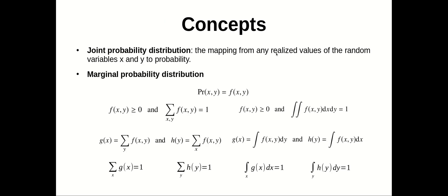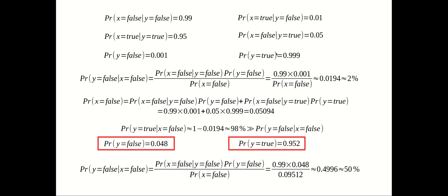Now let's look at a second example related to lie detection. We have a polygraph test that will allow us to examine if a person is lying or telling the truth. We are going to use Bayes' theorem to evaluate whether a person is actually lying or not. We have two hypotheses: one is that the person is lying, which is Y equals false, and the other is that the person is truthful, so Y equals true.